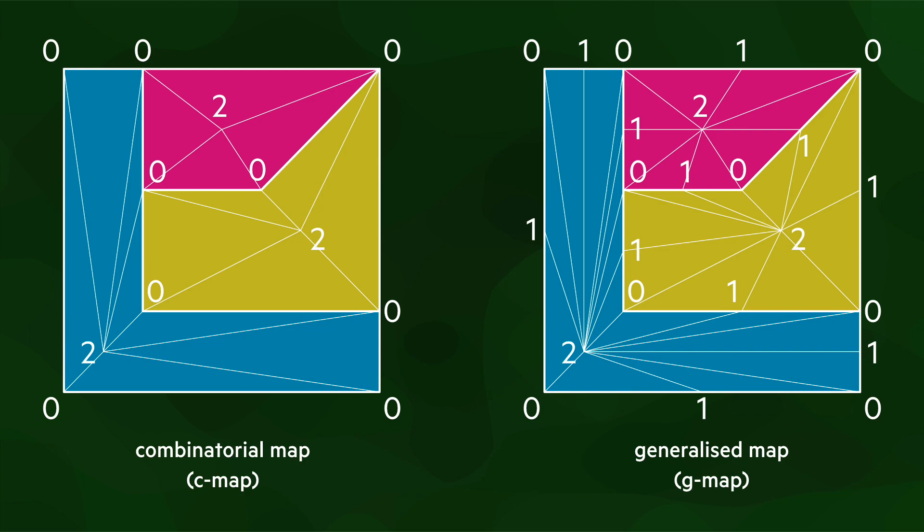The triangles here are the main primitives in a combinatorial map, which are called darts. At this point, it's important to note that there's a major difference between a barycentric triangulation and the triangulation we've done here to obtain the darts in a combinatorial map.